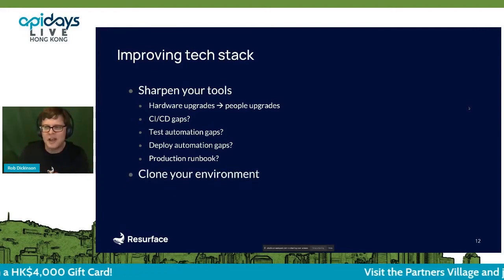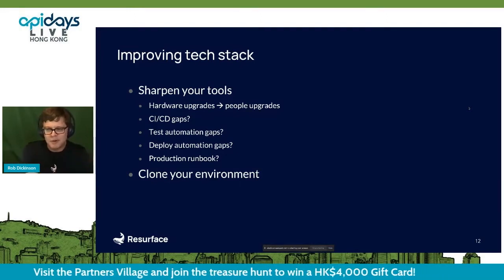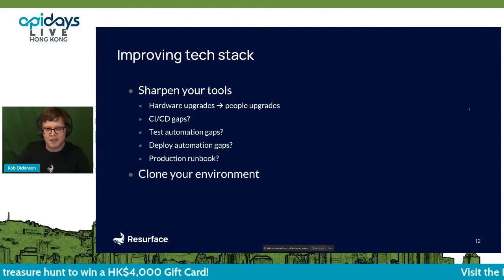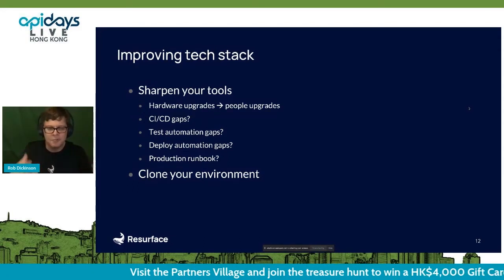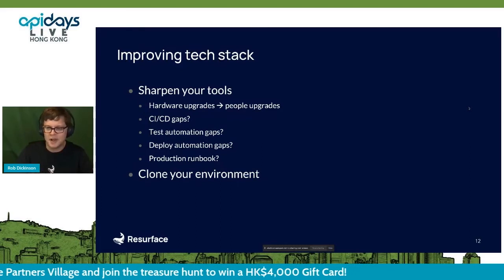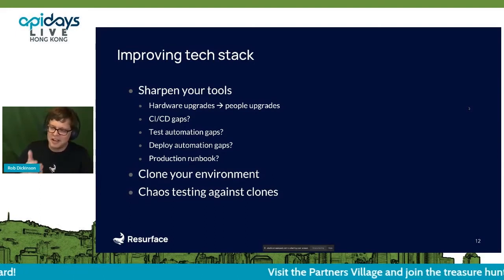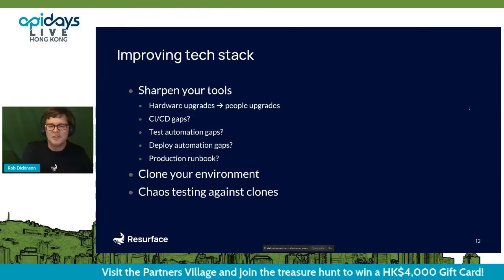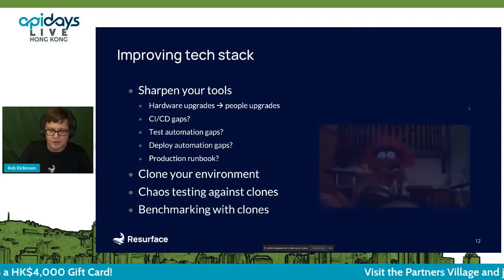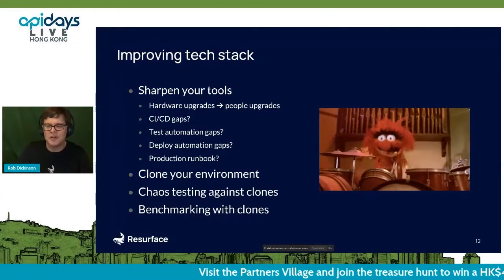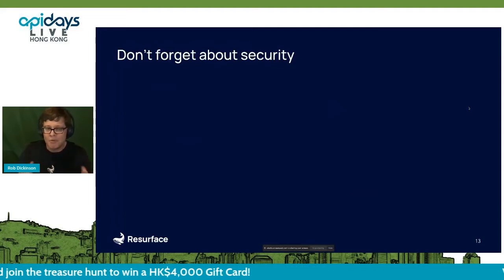Then you can get to the next level: clone your environment. As soon as you can clone your environment — separate from official staging and production, your own environment that's just as good as the real thing — you will cross a huge threshold in how many contributions your team can actually make. You can do chaos testing against those clones, which is very hard to justify against a failing production system. Then you can benchmark with those clones, churn out new builds, and try new experiments.